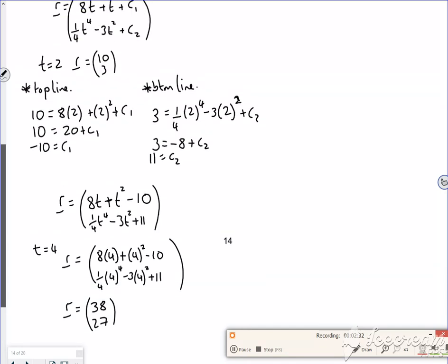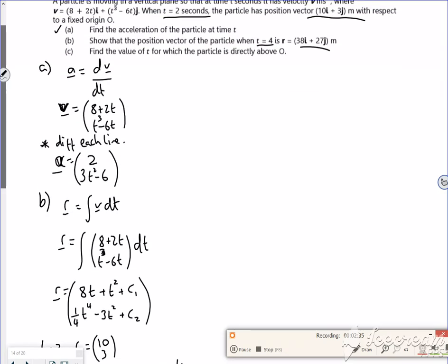Right, so let's go back up to the top of the page. My God, how much work did I do? Right, C says, find the value of T for which the particle is directly above the origin. So if you think about that, that's its position. It's not where it's moving, it's its position. If it's directly above the origin, then I'm saying that the I component is equal to zero.